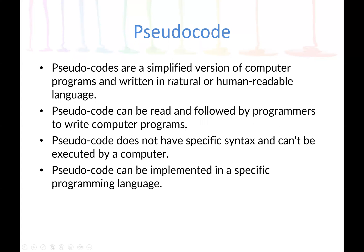A pseudocode is a simplified version of a computer program written in natural language or human-readable language. In this course, we are going to use English language. Pseudocode can be read and followed by programmers to write computer programs. We normally use pseudocode to design a program, then from the pseudocode we translate using a programming language to write the code.